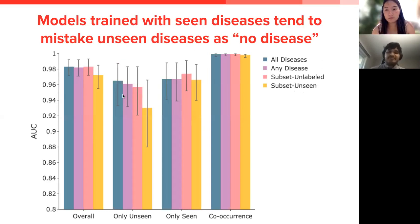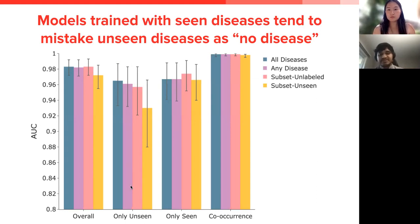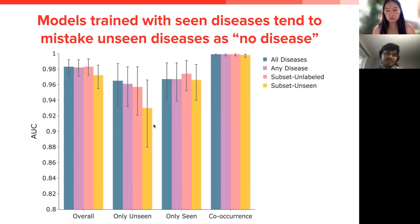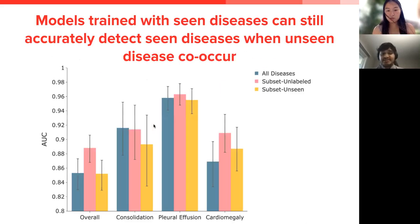The first ancillary experiment was to determine the performance of these various models in detecting no disease. Our results showed that deep learning models may succeed in identifying no disease versus the presence of a disease when an unseen disease co-occurs with a seen disease — as seen in the last graph to the right, where you have high AUCs for co-occurrence. However, a deep learning model may falsely report no disease if an unseen disease appears alone, as shown in the only-unseen graph. Such a mistake can result in delays in diagnosis and treatment and can possibly even be life-threatening.